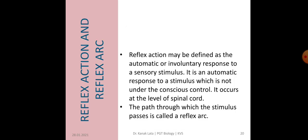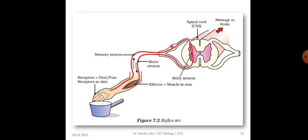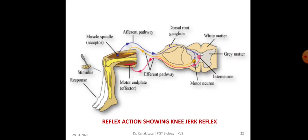Now the last topic of today's session is reflex action and reflex arc. Reflex action may be defined as the automatic or involuntary response to a sensory stimulus. It is an automatic response to a stimulus which is not under the conscious control of brain but occurs at the level of spinal cord. Reflex arc is the path through which stimulus passes. The given figures show reflex arc and reflex action showing knee jerk reflex.